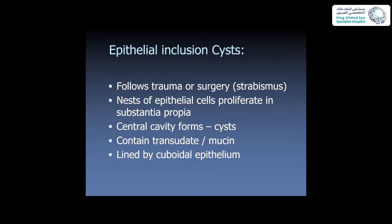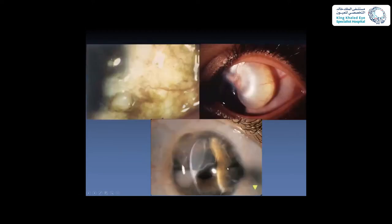Epithelial inclusion cysts often behave like malignant lesions. They usually follow trauma or surgery, especially strabismus or retinal surgery. They consist of nests of epithelial cells that proliferate under the conjunctival surface, forming a cavity lined by epithelium containing fluid — a transudate if from normal conjunctiva, or mucin with turbid milky material if from mucin-secreting cells. Another cyst following trauma with communication to the anterior chamber can grow hugely and requires major surgery.